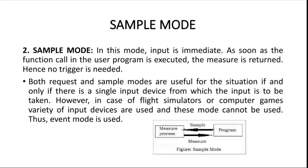Next is sample mode. In this mode, input is immediate — you don't need to wait for a trigger to happen. As soon as the function call in the user program is executed, the measure is returned. That means no trigger is needed here. Both request and sample modes are useful only if there is a single input device.